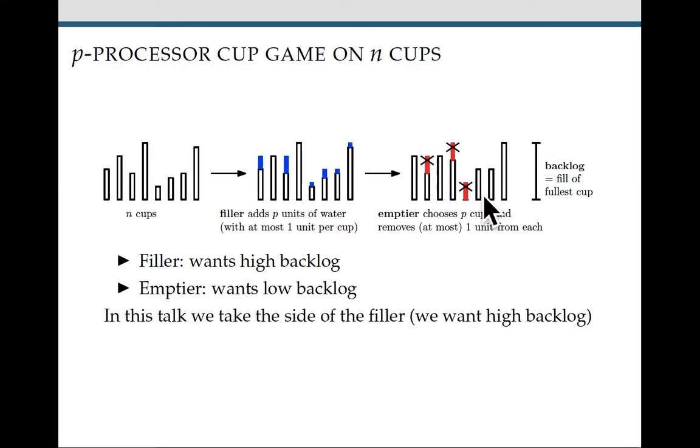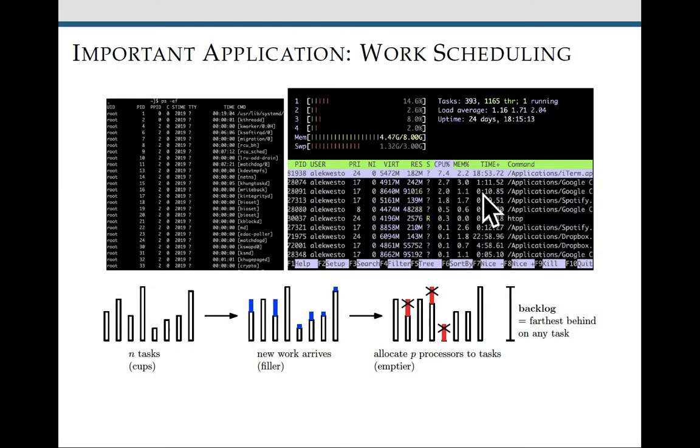And the cup game has lots of really important applications. For instance, work scheduling. As you probably know, on your computer, your computer is running a lot of different programs, also called tasks. So the work scheduling problem is you have a lot of tasks and they all have some amount of work that needs to get done, but your computer only has maybe one or two processors.